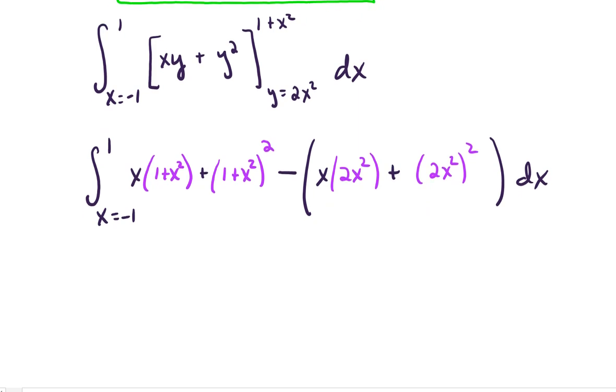Okay, let's tidy this up before we do any more work to compute the next integral. If we tidy this up, we work out and find that we've got a negative 3X to the 4th minus X cubed plus a 2X squared plus X plus 1. And now...